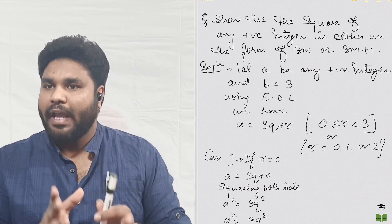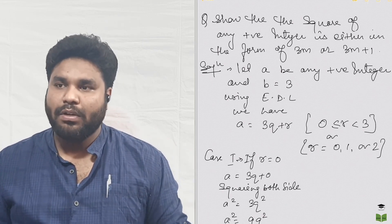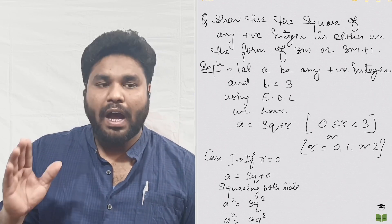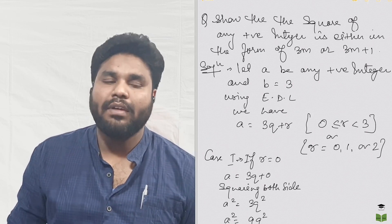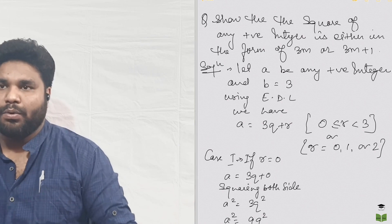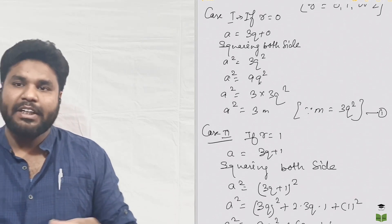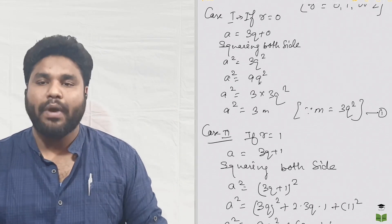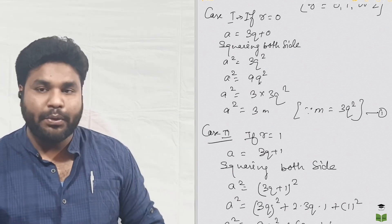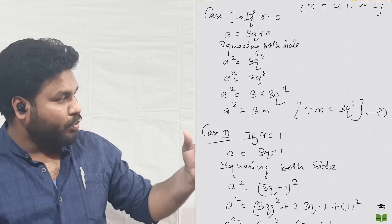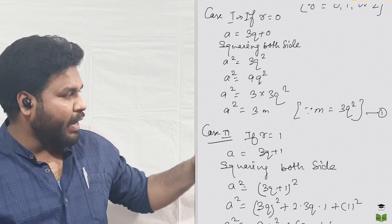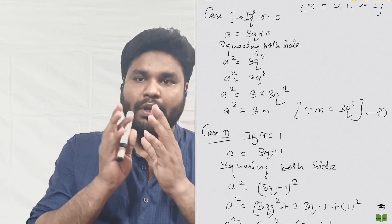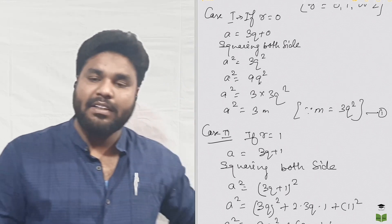Using Euclid Division Lemma, A equals 3Q plus R, where R is always greater than or equal to 0 and less than 3. So R equals 0, 1, or 2. Case 1: if R equals 0, then A equals 3Q. Since the question asks about the square of any positive integer, we square both sides. A squared equals 9Q squared. Taking 3 as common, A squared equals 3 times 3Q squared, which we write as A squared equals 3M, where M equals 3Q squared. So when R equals 0, the square of any positive number is in the form of 3M.